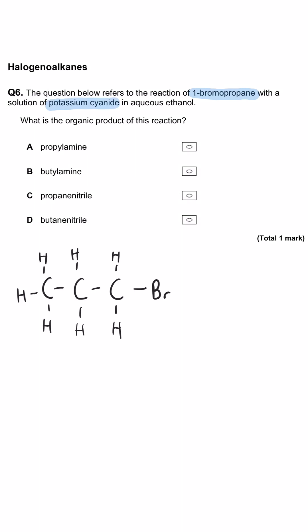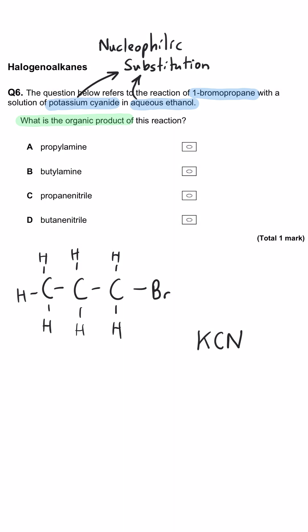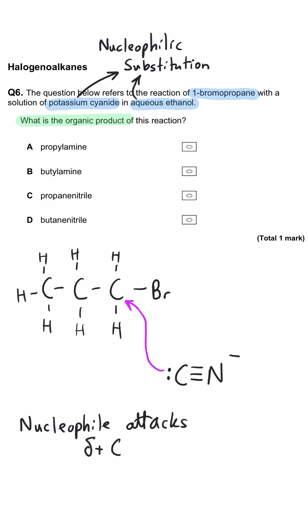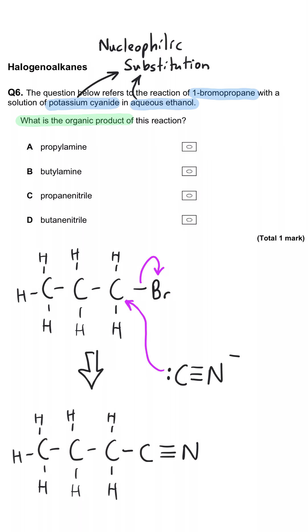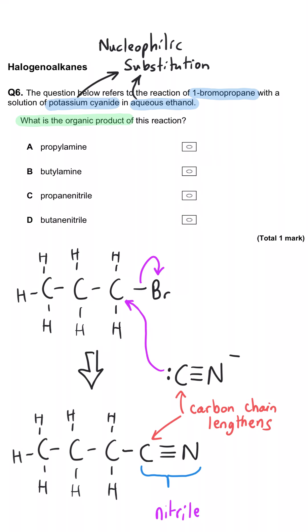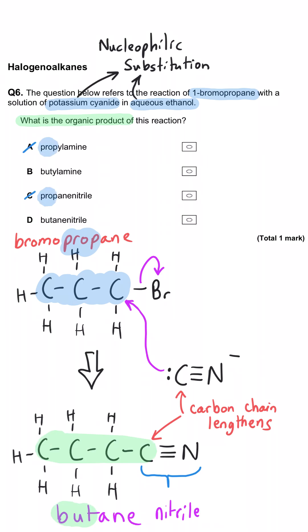The question refers to the reaction of 1-bromopropane with potassium cyanide in aqueous ethanol. The cyanide ion acts as a nucleophile, attacking the electron-deficient carbon bearing the halogen and substituting it in a nucleophilic substitution reaction. This lengthens the carbon chain by one and makes a nitrile, turning the three-carbon chain into a four-carbon chain. We rule out A and C since they don't increase the chain length, and we're not making an amine, so D is correct.